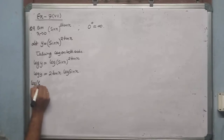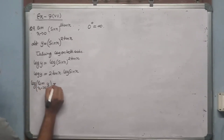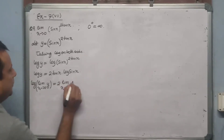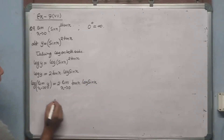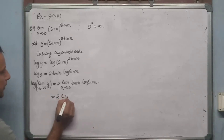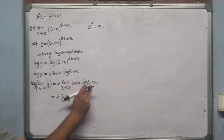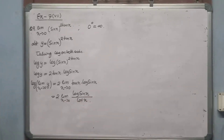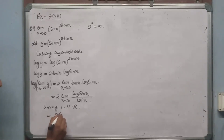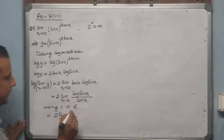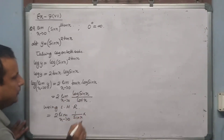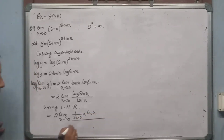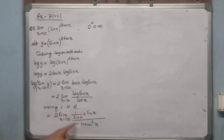Applying the limit: log(limit x→0 of y) = 2·limit x→0 of tan x·log(sin x). To use L'Hospital's theorem, convert to numerator/denominator form: write log(sin x) over cot x (since tan x = 1/cot x). Applying L'Hospital's rule: derivative of log(sin x) is (1/sin x)·cos x, and derivative of cot x is −cosec²x.